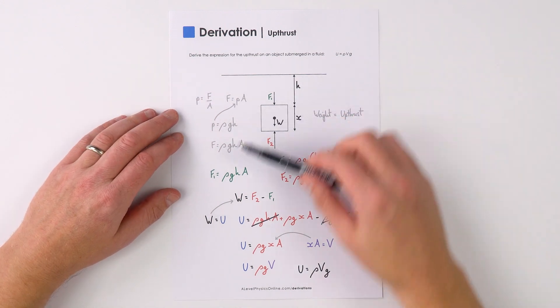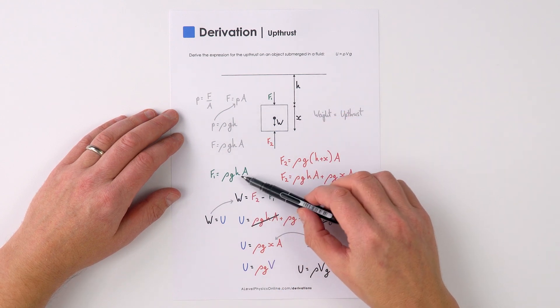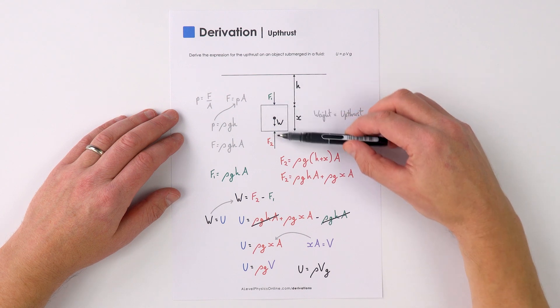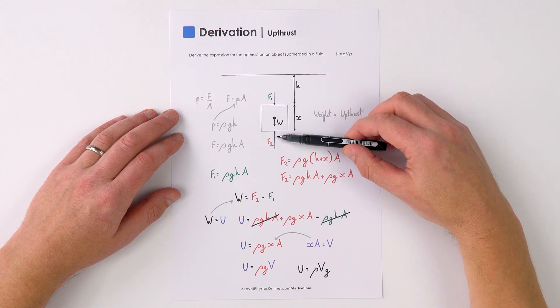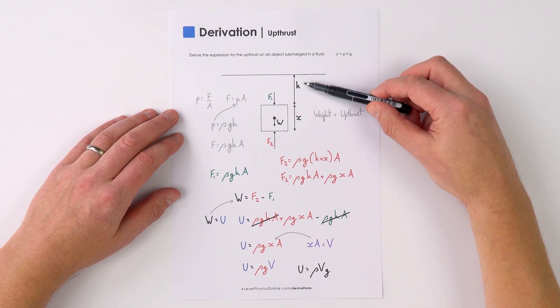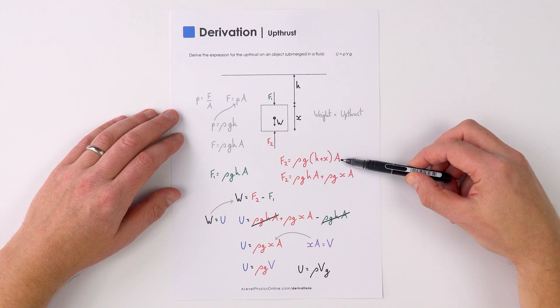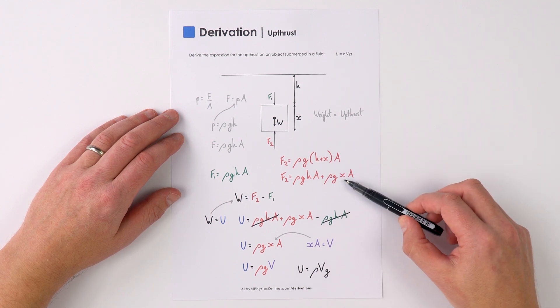If we think about what's going on, F1, the force on the top surface, is equal to ρgha. But the force on the bottom surface is bigger upwards because here the pressure has a bigger value, and that's equal to ρg(h+x) multiplied by a, which is therefore equal to ρgha plus ρgxa.